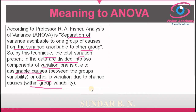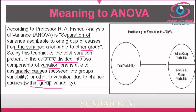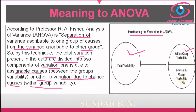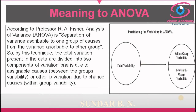Here you can see in the picture the partitioning of variability in ANOVA into two groups. Consider this circle as the total variability present in the data. This variability is divided into two groups: one is within-group variability, which is variation due to chance causes, and the other is between-group variability, which is variation due to assignable causes. By this way we divide the whole variability present in the data into two groups.